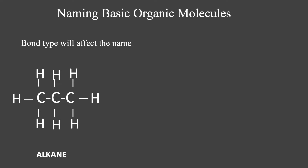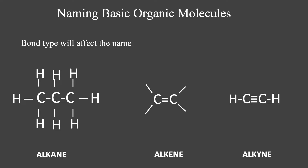The second part of the name is essentially determined by the type of bond that you have. So do we have an alkane — single bonded carbon-carbon — an alkene, double bonded carbon-carbon, or an alkyne, triple bonded carbon-carbon bond? And this will tell us the second half of the name.